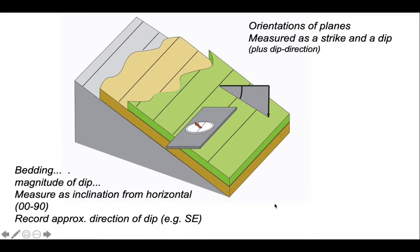To measure the inclination of the plane, we measure its dip, which is measured from horizontal in the direction of maximum inclination. That will have a value somewhere between 0 and 90. To avoid any ambiguities, we also record the approximate dip direction, in other words towards the southeast. So that's how we measure a plane.